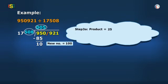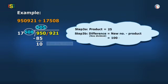And subtracting this result from 100 gives us 75 as our new dividend, which completes step 3b.